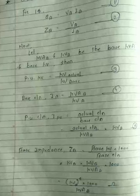Let kVA base and kV base be the base kVA and base kV. Then per unit kV equals actual kV upon kV base. So: per unit kV = kV(actual) / kV(base). This is expression number three.